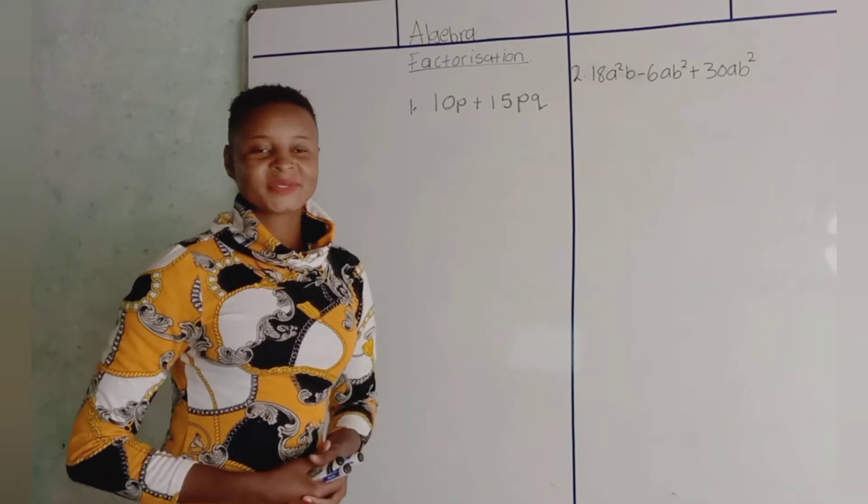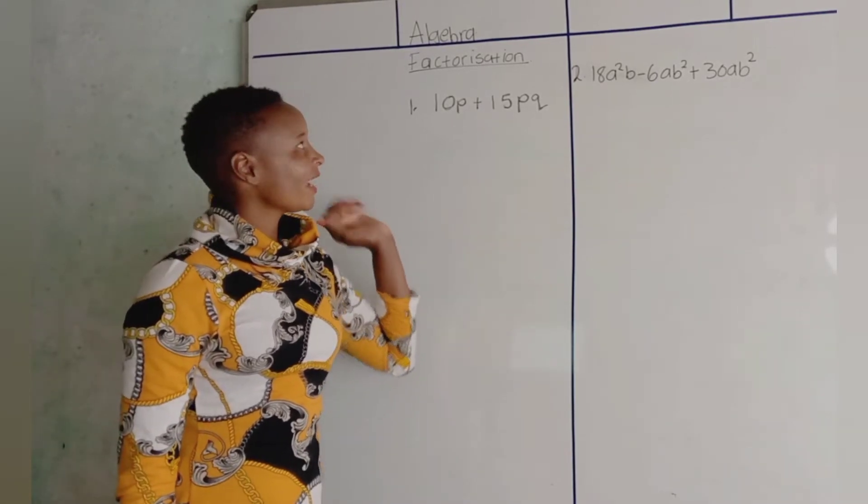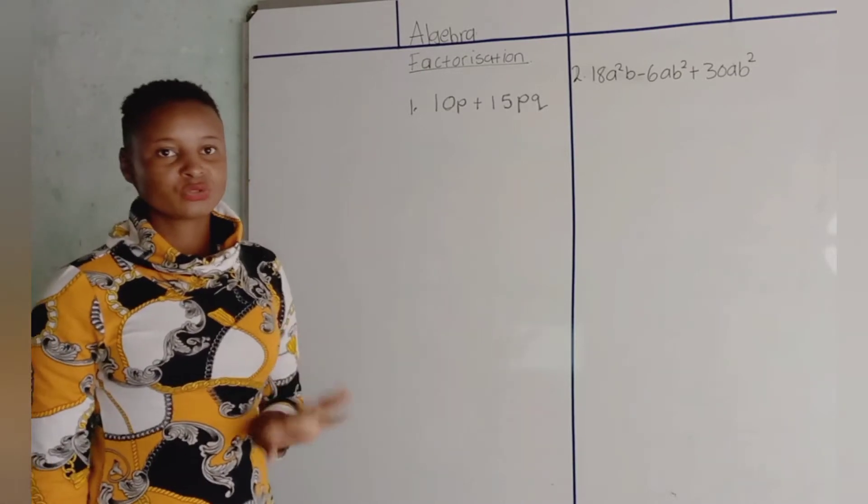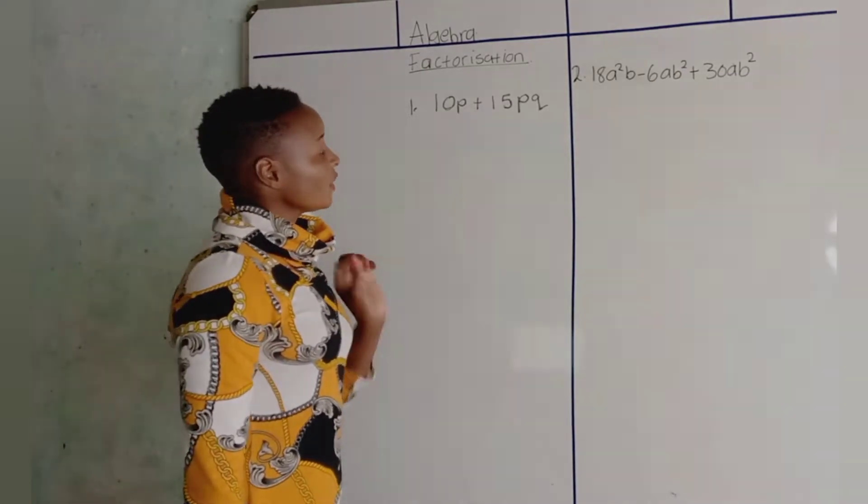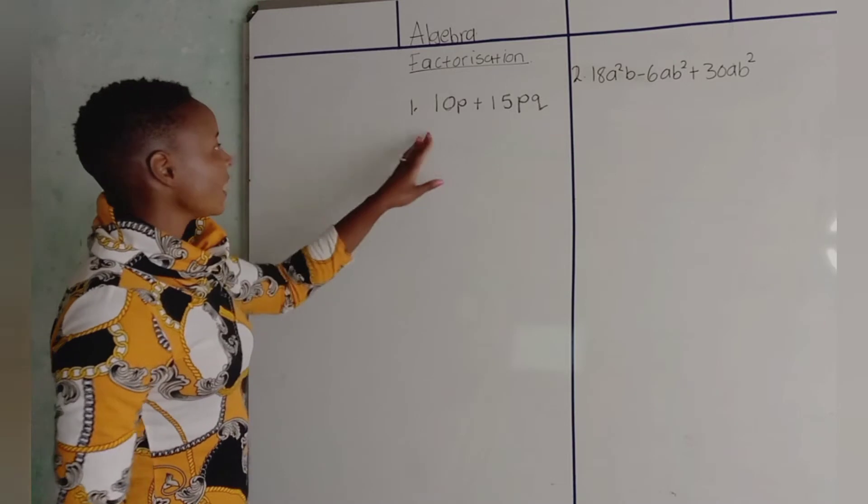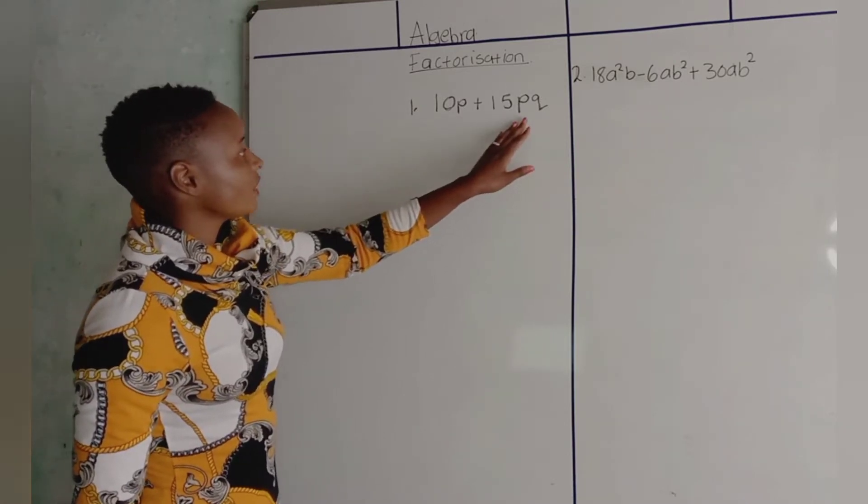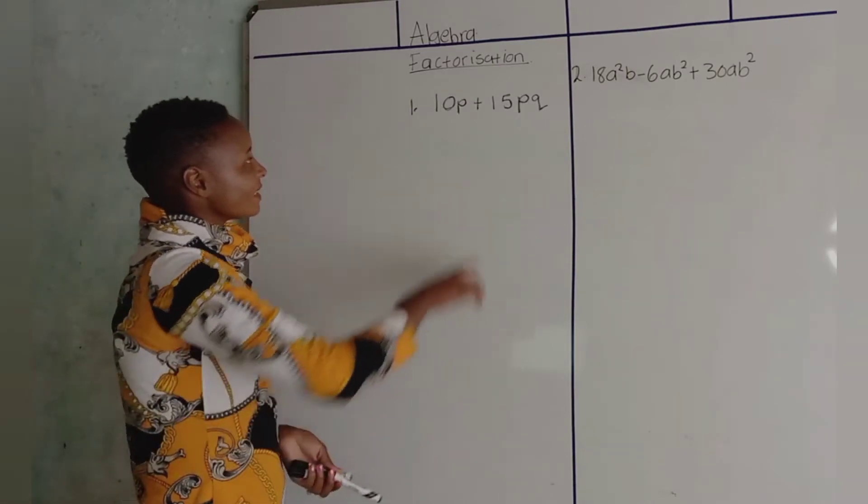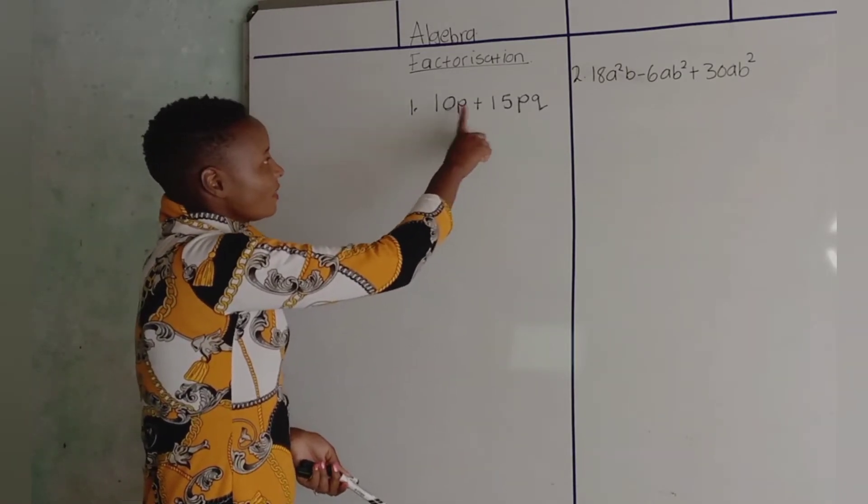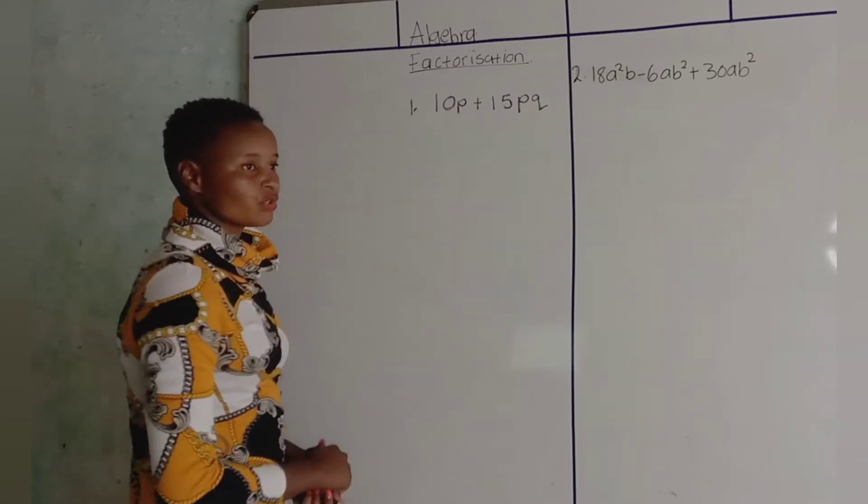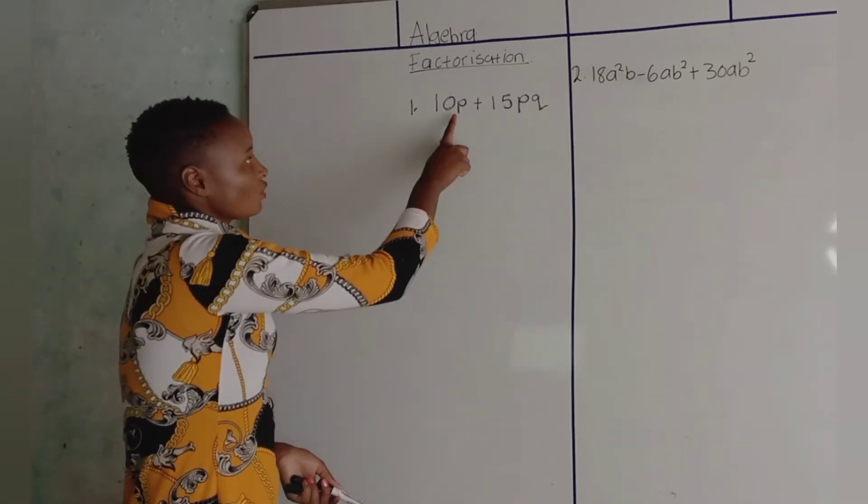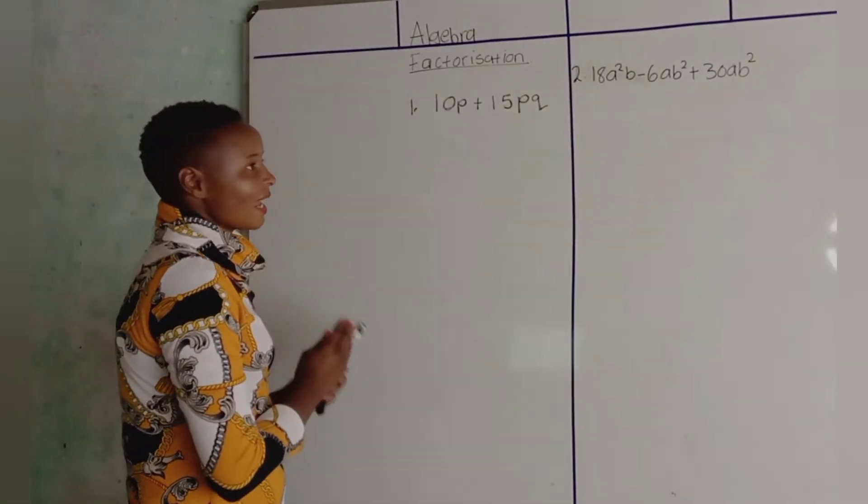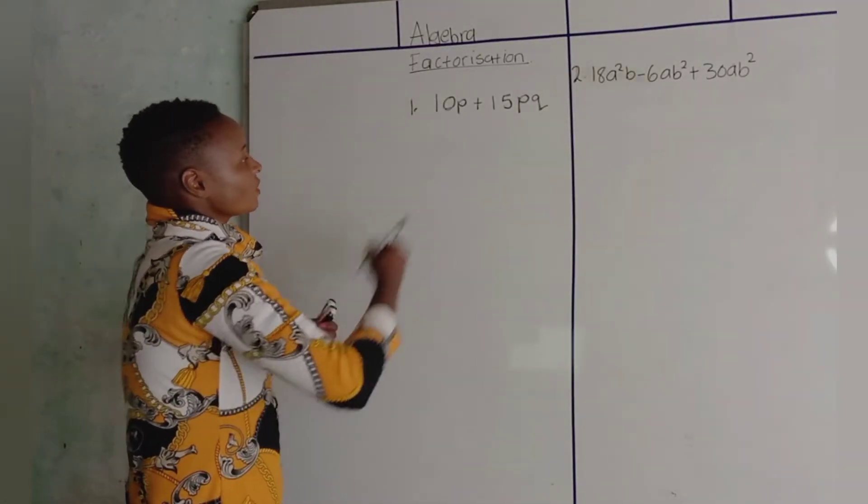Hi guys, welcome to my math tutorials. Today I'm going to be looking at simple factorization and I'm going to explain it in Zulu. The equation that I'm planning: 10p plus 15pq.